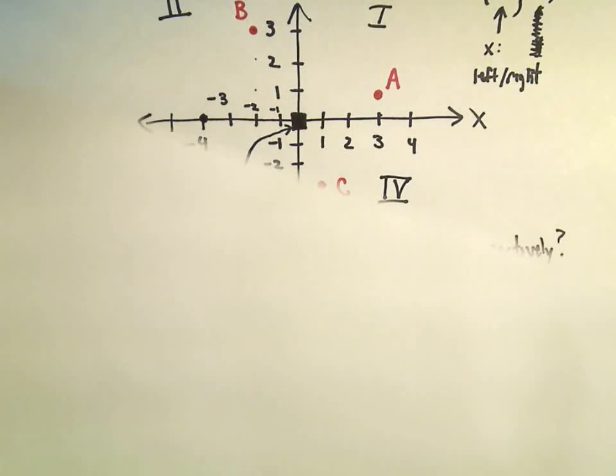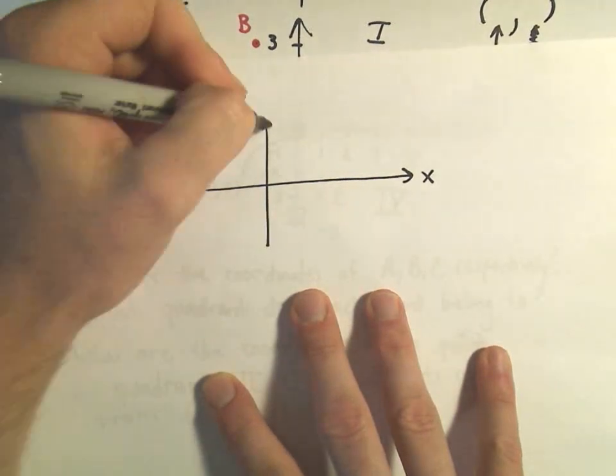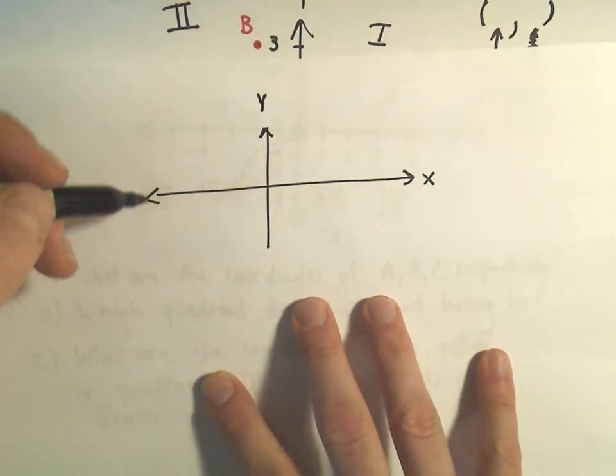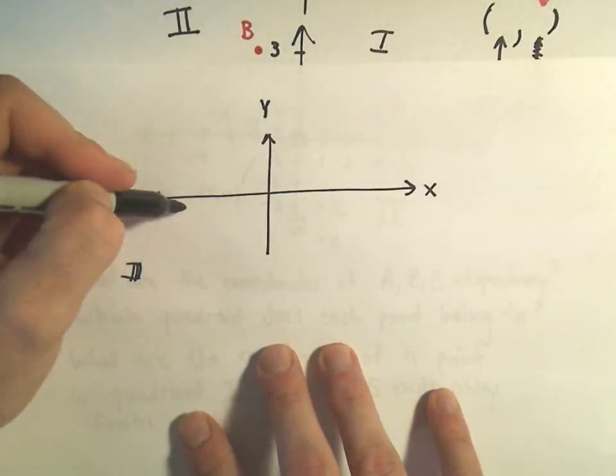So let me draw another picture here real quick, just because this one's a little cluttered. So if this is the x axis, this is the y axis. If we have to be in quadrant 3, if we're going to be 5 units down, well, 5 units down,